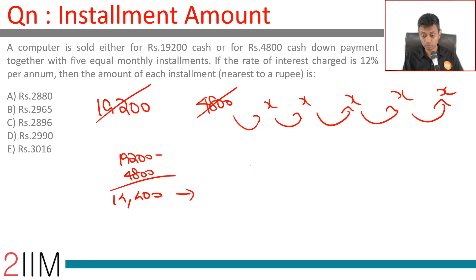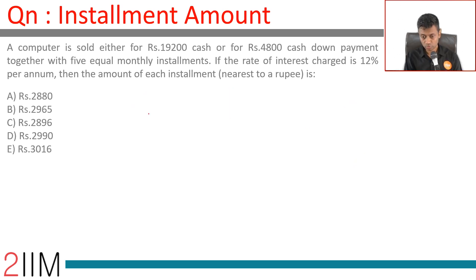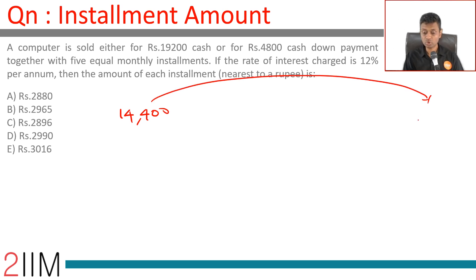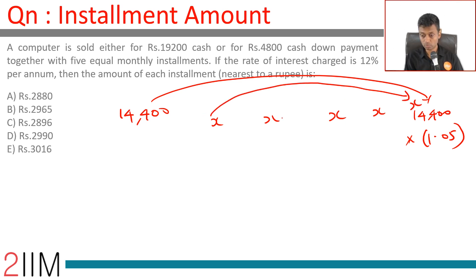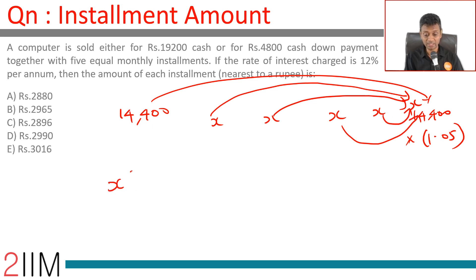This ₹14,400 is paid as five installments of x each. Suppose we held on to that for five months — that will be 14,400 into 1.05. This is the same as repaying x held for four months, x for three months, x for two months, x for one month, and one final x.